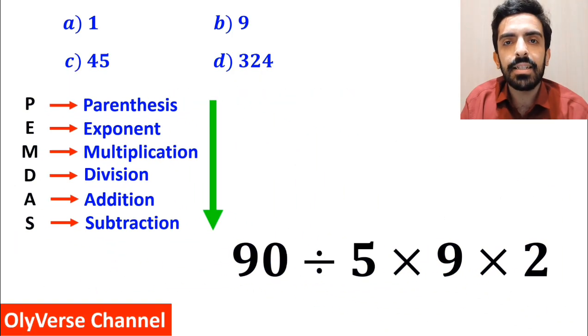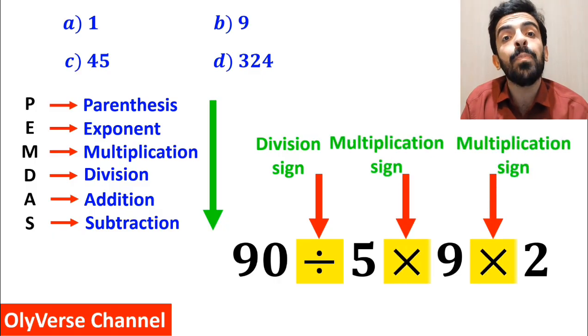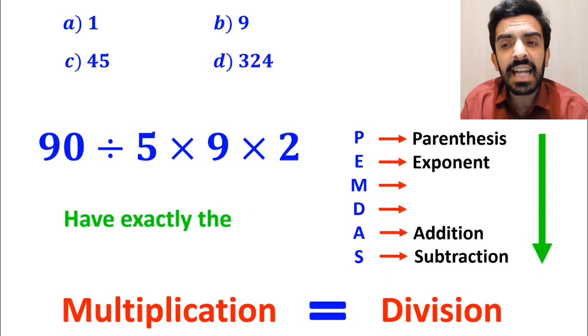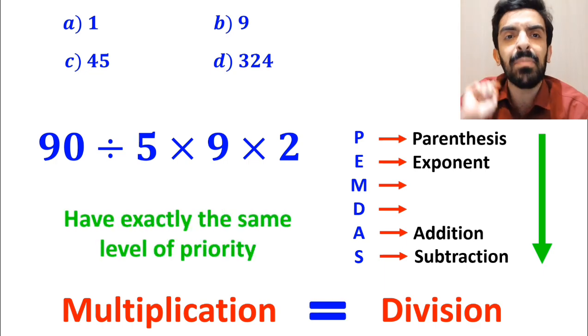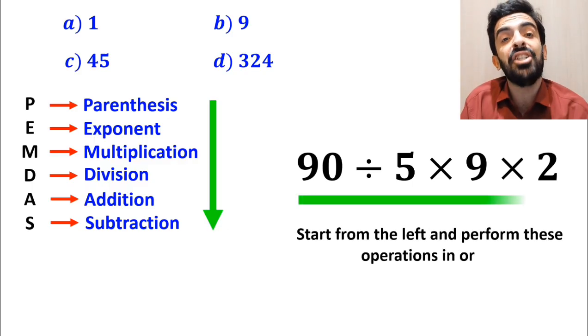Alright, as you can see on the screen, in this expression we have one division sign followed by two multiplication signs. We must pay close attention that multiplication and division have exactly the same level of priority in the PEMDAS rule. In this situation, the best thing to do is to start from the left and perform these two operations in order.